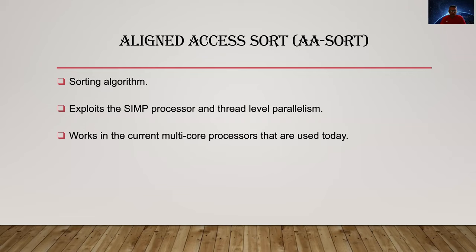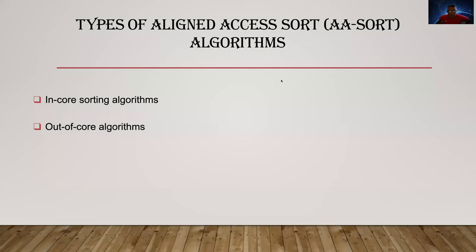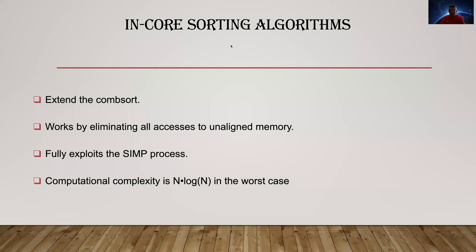Align Access Sort is featured as a sorting algorithm that can exploit both the SIMD instruction and the thread-level parallelism noted in the different multi-core processors used today. It is featured to have two algorithms referred to as in-core and out-of-core sorting algorithms. Both algorithms are significant and work to take advantage of the SIMD instruction. Also, they can run in parallel with the use of multiple threads.